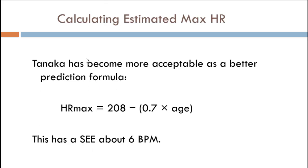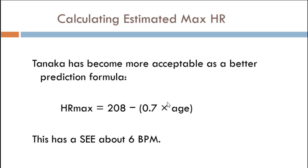Tanaka came up with a formula that has been accepted and well validated: instead of 220 minus age, it's 208 minus 70% of the age. It still has a standard error of about 6 beats per minute — better than Fox-Haskell, but the math is harder. 220 minus age is a simple subtraction, but with Tanaka you have to take 70% of your age and then subtract. It's a better formula, and with phones available to do the calculation quickly, it's worth using. We now get the max heart rate in order to calculate a target heart rate — that's the third heart rate concept: resting heart rate, max heart rate, and target heart rate.